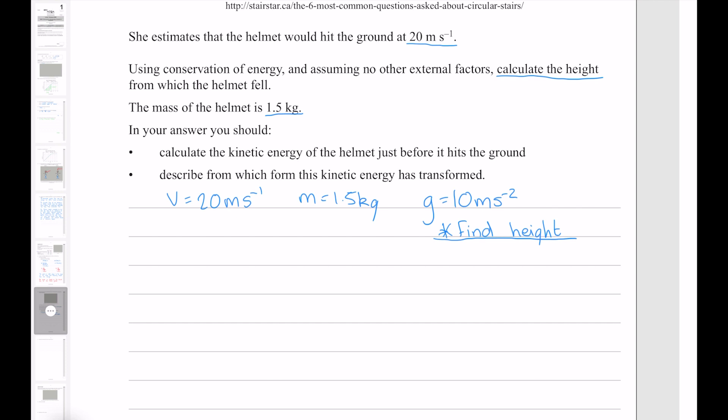To find the height, we can use the equation for gravitational potential energy on your formula sheet. We can rearrange this equation by dividing both sides by mass and gravity. Now we know the mass, we know the gravity, but we don't know the gravitational potential energy. But what we do know is that there are no external factors, and we can use conservation of energy, and as it wants us to do, consider the energy transformations. So what we know is that as our helmet falls, at the top we're going to have our gravitational potential energy. By the time the helmet gets to the bottom, all of that gravitational potential energy is going to be transferred to the kinetic energy, assuming that there are no other external factors, such as air resistance.